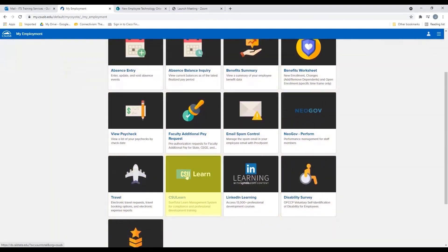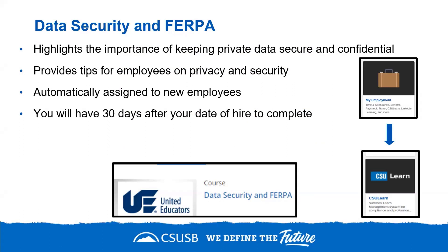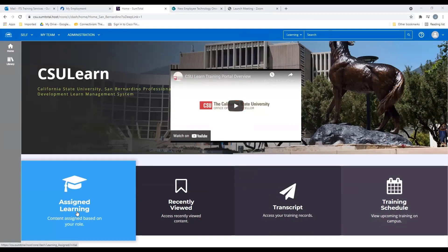You will notice the CSU Learn platform, where you will find the compliance trainings you need to complete. One key compliance training is the Data Security and FERPA training, which highlights the importance of keeping private data secure and provides steps employees can take to maintain the security and confidentiality of private information. If you are unable to complete the Data Security training today, you will have 30 days after your date of hire to complete this requirement. Please note this course is automatically assigned to you, and you must complete it before requesting access to any campus modules or systems. When you click the Assigned widget, you'll see the Data Security course listed; if you do not see it, please check back at a later time.